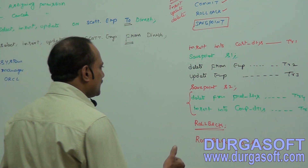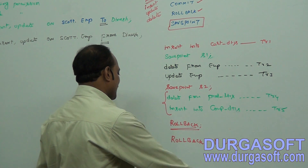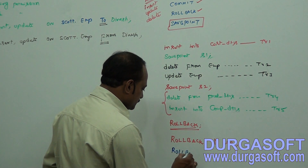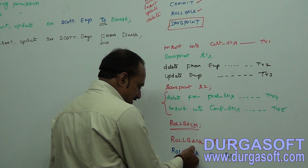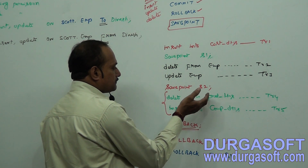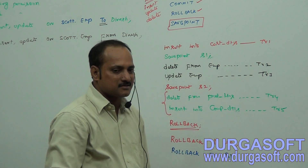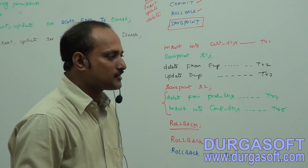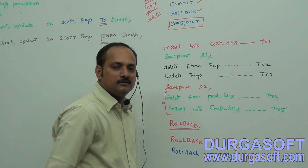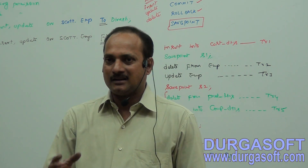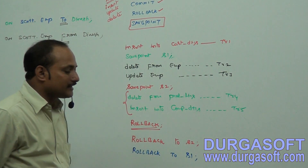If somebody wants to cancel transactions T2, T3, T4, and T5, apply ROLLBACK TO S1. This cancels those four transactions up to S1 only. Before S1, if you have any transactions, they are safe — they cannot be cancelled. So save points are used to save some transactions under a save point name, which is very helpful whenever you are applying the ROLLBACK command.